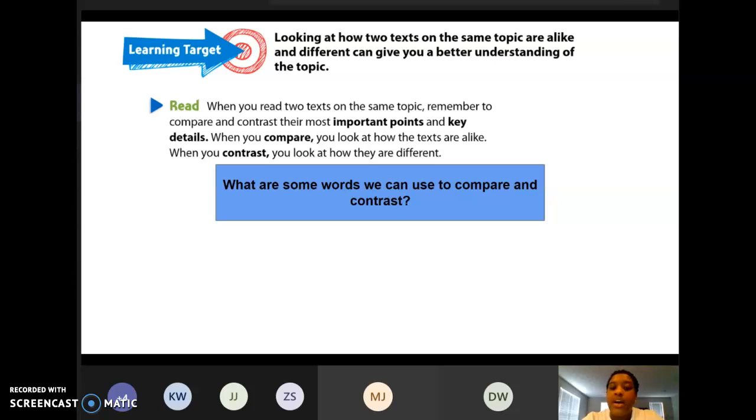Looking at how two texts on the same topic are alike and different can give you a better understanding of the topic. When you read two texts on the same topic, remember to compare and contrast their most important points and key details. When you compare, you look at how the texts are alike. When you contrast, you look at how they are different.